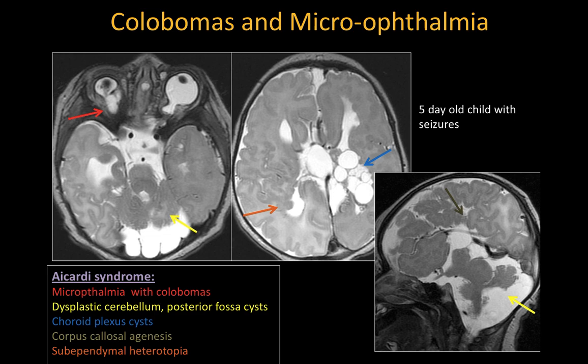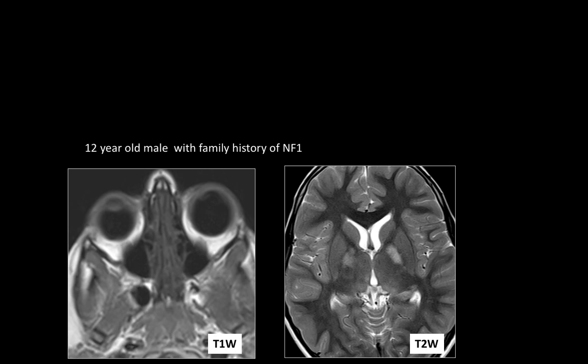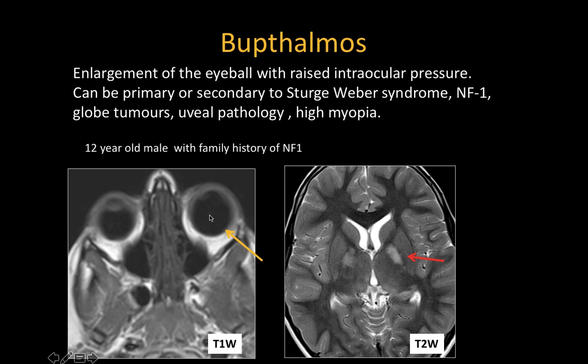Coloboma with microophthalmia is associated with various syndromes including Aicardi syndrome, CHARGE syndrome, and Beckwith syndrome. This 12-year-old male with a family history of NF1 has large globes — this is buphthalmos, which is enlargement of the globe along with raised intraocular pressure. It can be primary or secondary to Sturge-Weber syndrome, NF1, globe tumors, uveal pathology, or high myopia. This child also had abnormal white matter signal in bilateral globus pallidus, classically seen in NF1.